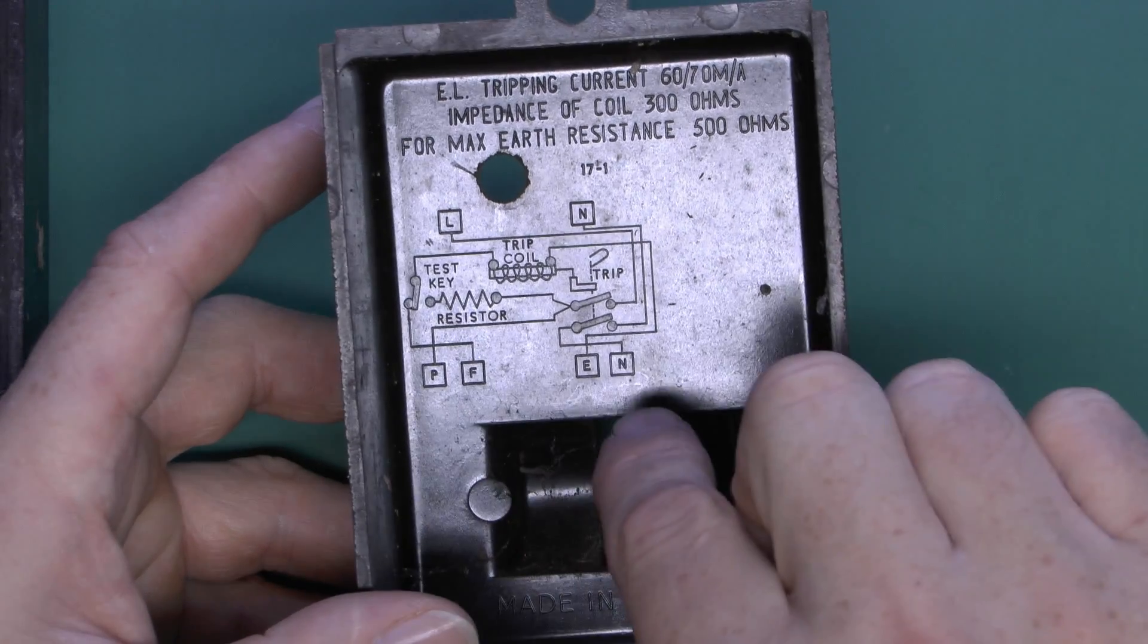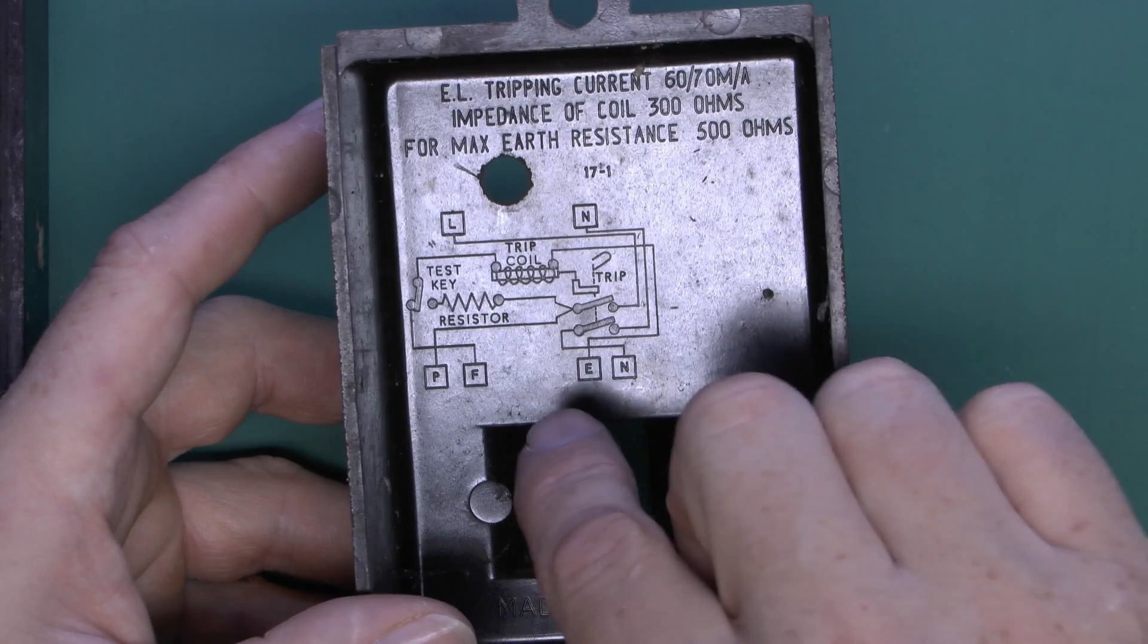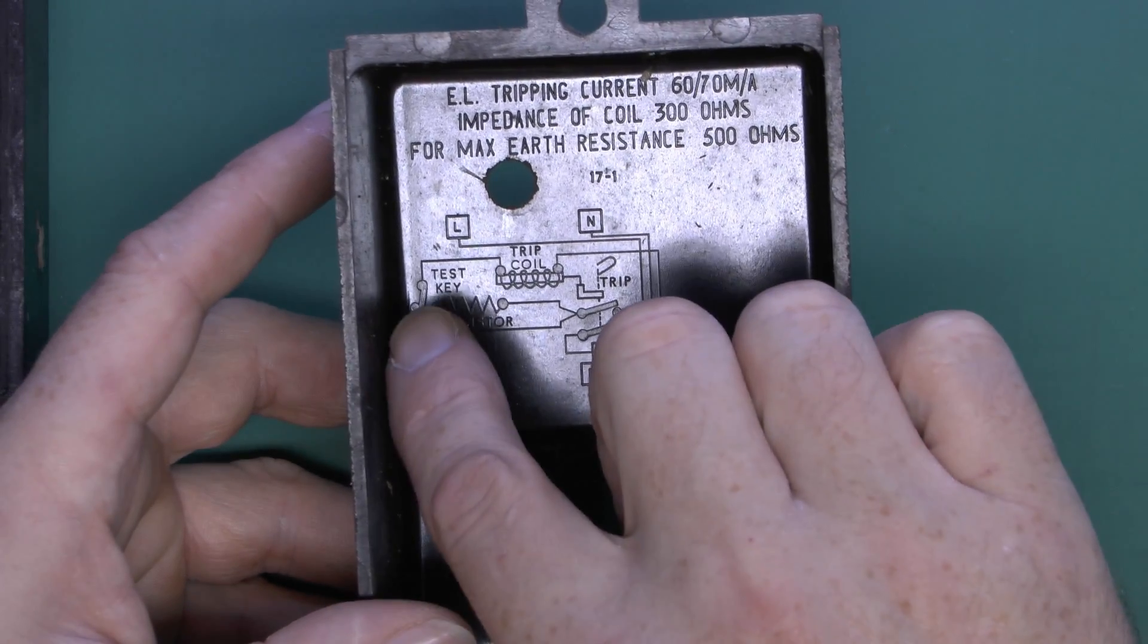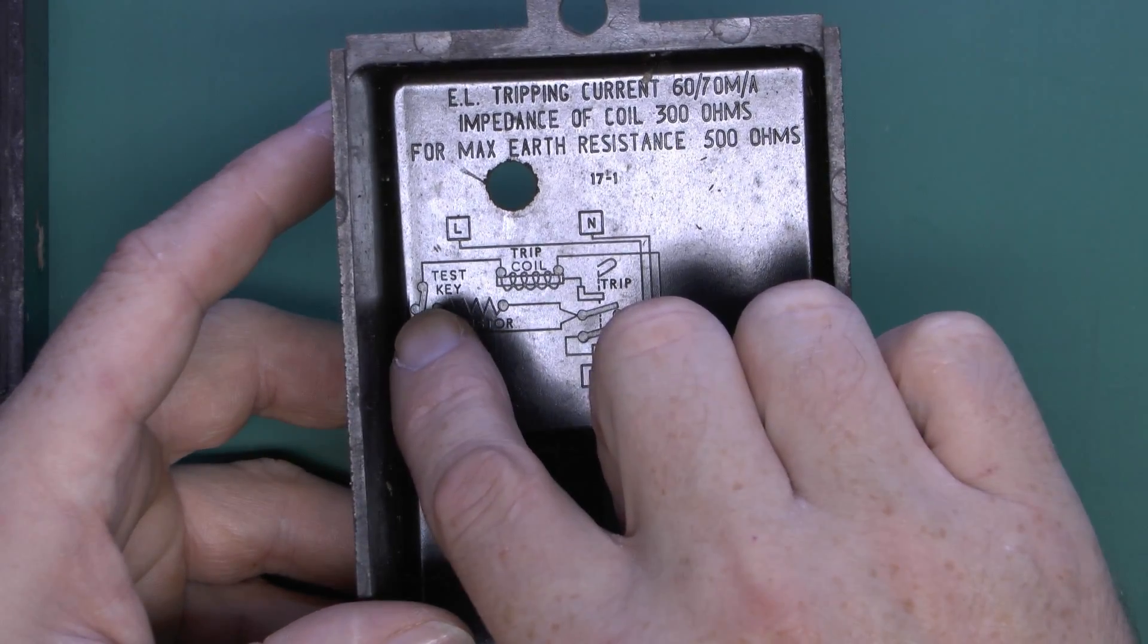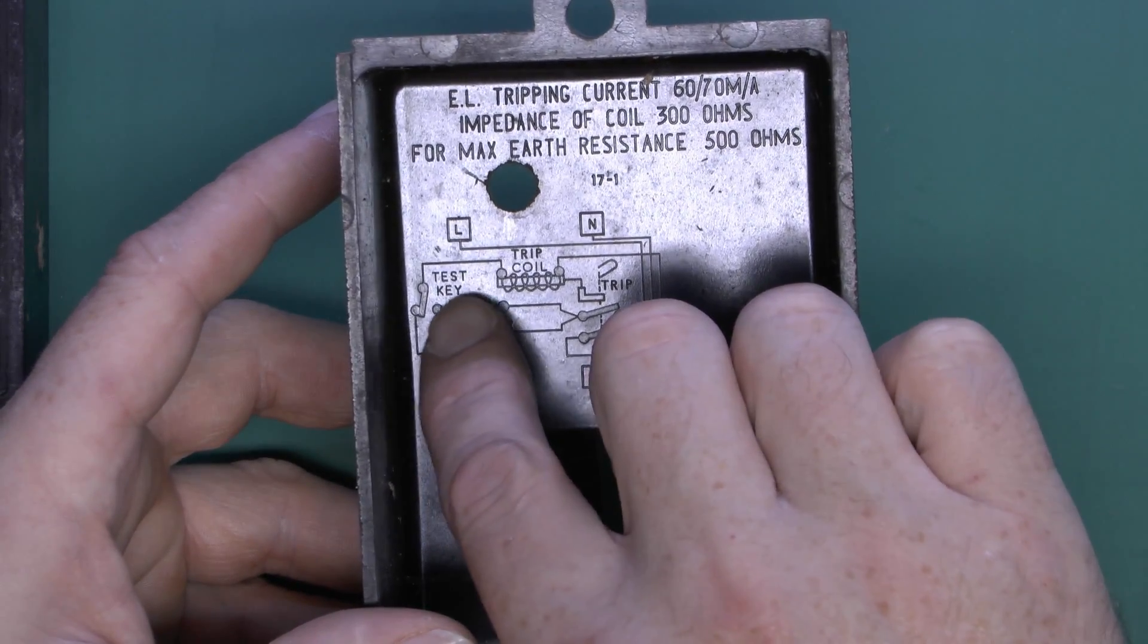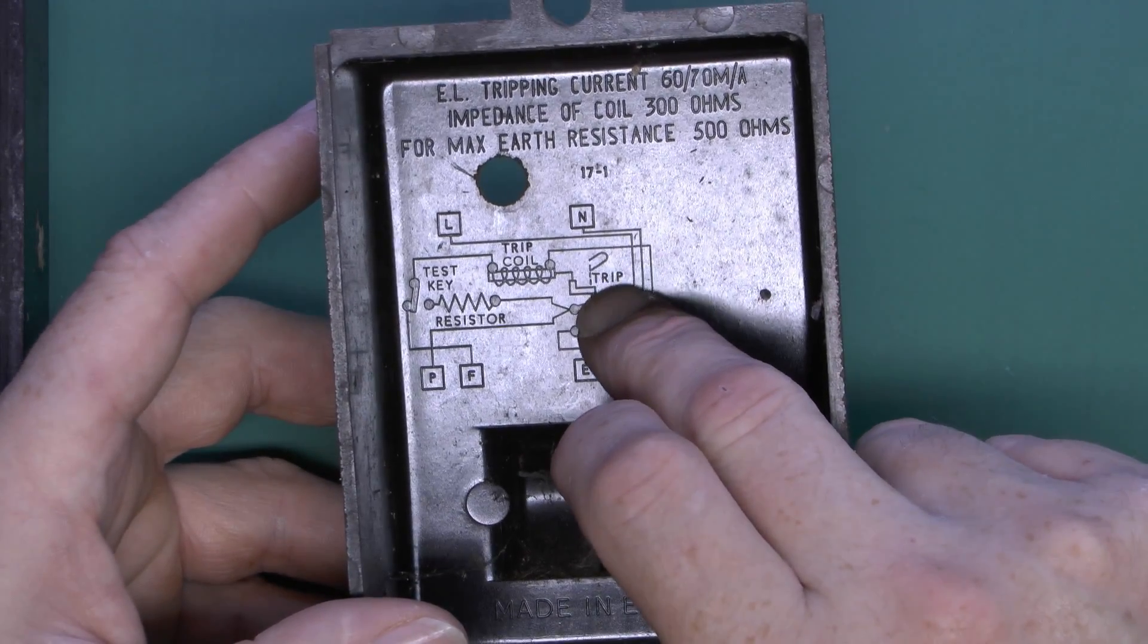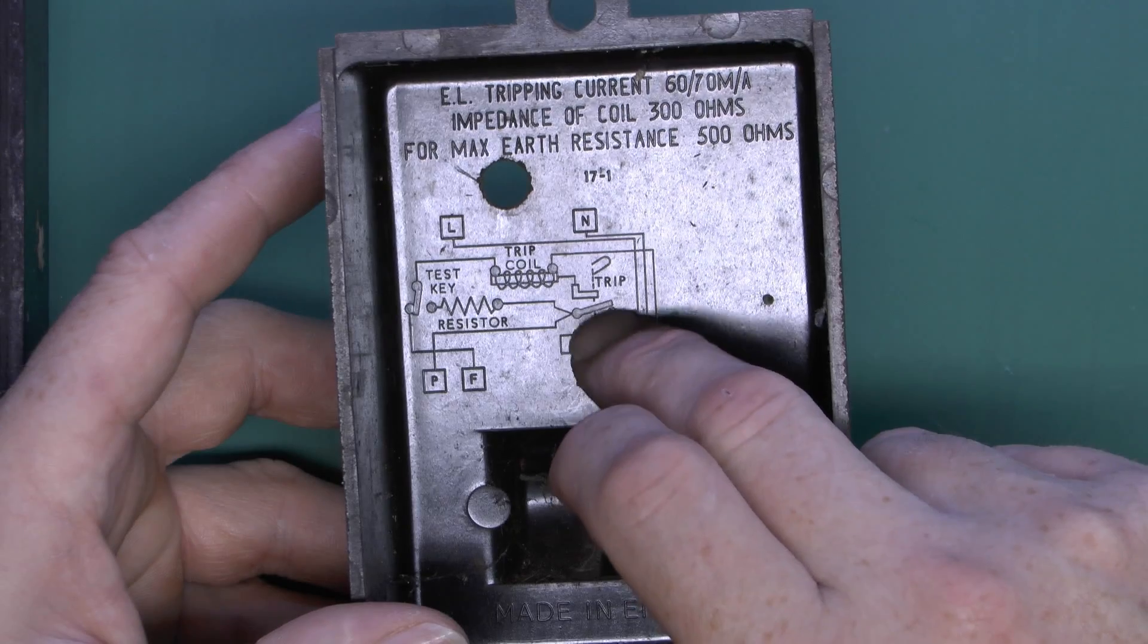Again here's your internal wiring. We've got the two connections there, the line and neutral, and then the phase and neutral at the bottom which are incoming and outgoing connections. Then your test resistor here and then the test key or button, and when they press that it just moves across to energize the coil there.